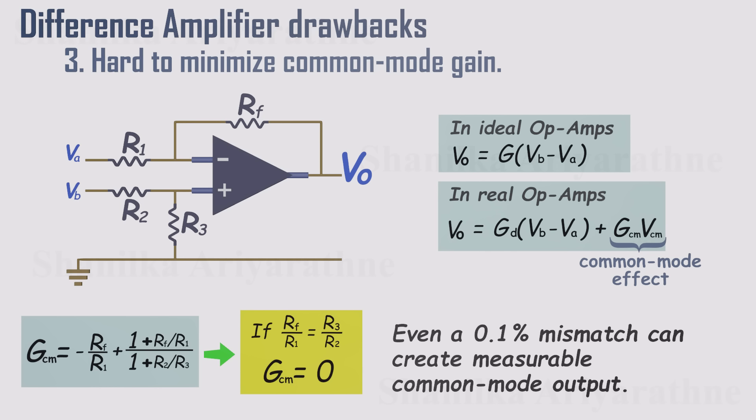That means we can't completely eliminate common mode gain in a simple differential amplifier. I've covered this in more detail in our video on common mode rejection ratio, so check that out if you haven't already. The main takeaway here is that with a basic differential amplifier, it's very hard to get rid of this effect. And as a result, the output often isn't as clean or accurate as we'd like.